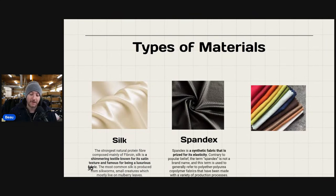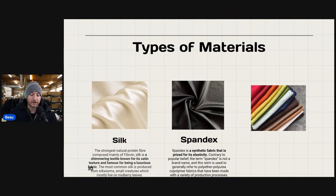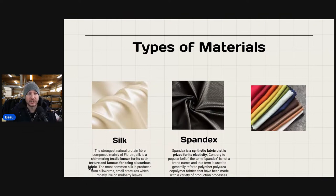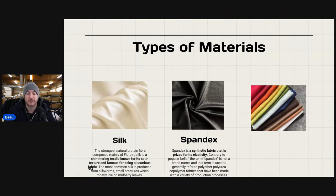Spandex is a synthetic fabric prized for its elasticity. Contrary to popular belief, the term spandex is not a brand name — it refers generally to polyether-polyurea copolymer fabrics made with a variety of production processes. Spandex gives that stretchiness to garments. It's added into jeggings and will have a little elastane to make 90% cotton jeans stretchable. You'll see a lot of spandex in leggings, athleisure products, and compression shirts. Make sure you're checking it in the item specifics.